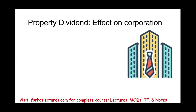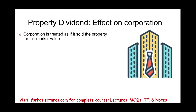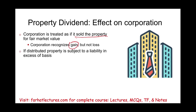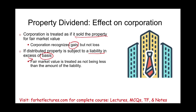Now let's look at the effect on the corporation. The corporation treats this distribution as if they sold the property at fair market value — so they either have a gain or a loss. The corporation will recognize the gain, but will not recognize the loss. If the distributed property is subject to a liability greater than the fair market value, the fair market value is treated as not being less than the liability — meaning the liability becomes the fair market value.